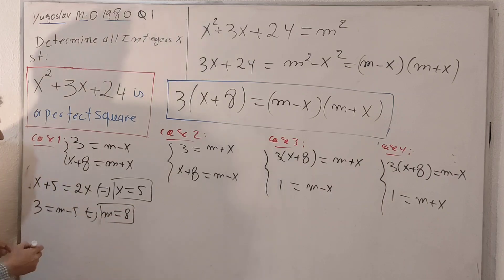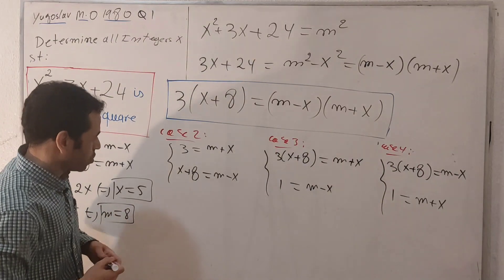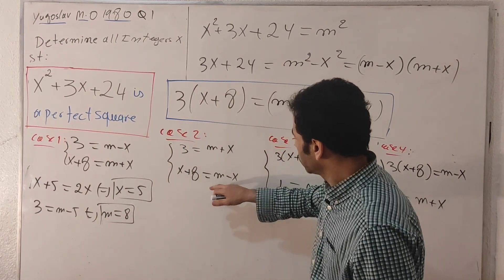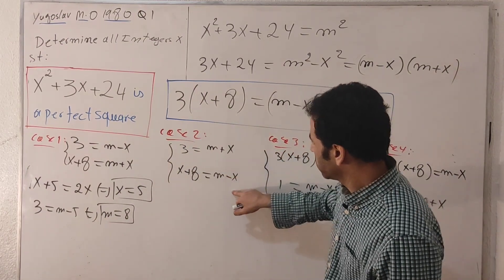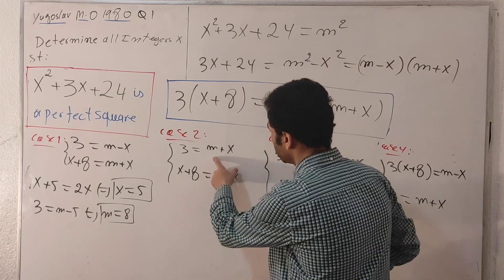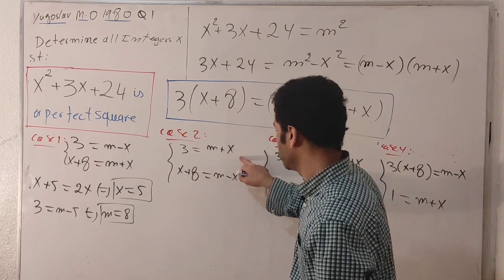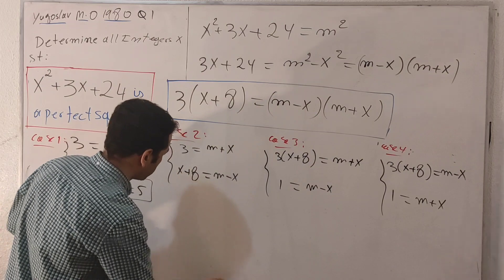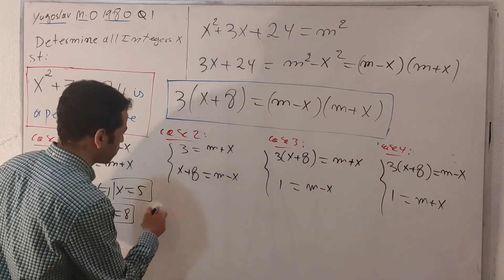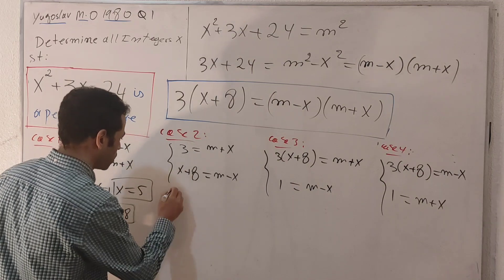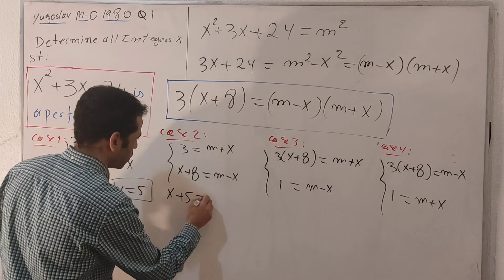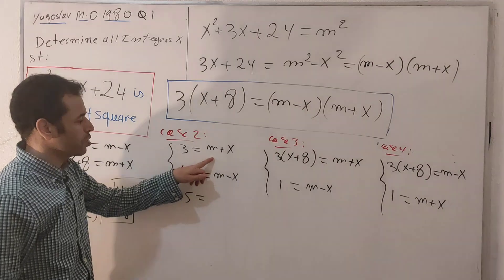Moving on to case two, I'll do the same — eliminate m. Doing the second equation minus the first: (x + 8) minus 3 gives x + 5. The m terms cancel, and I get minus x minus x, which is minus 2x.